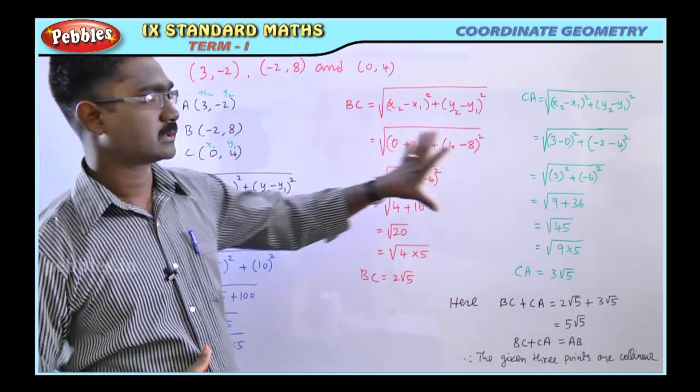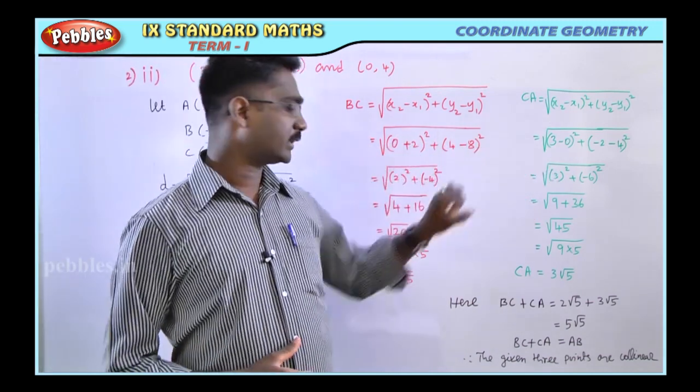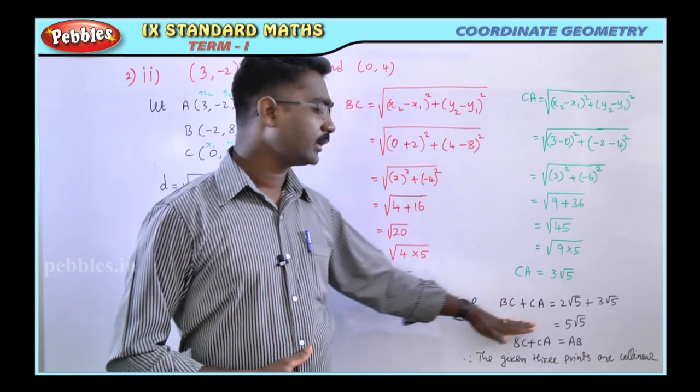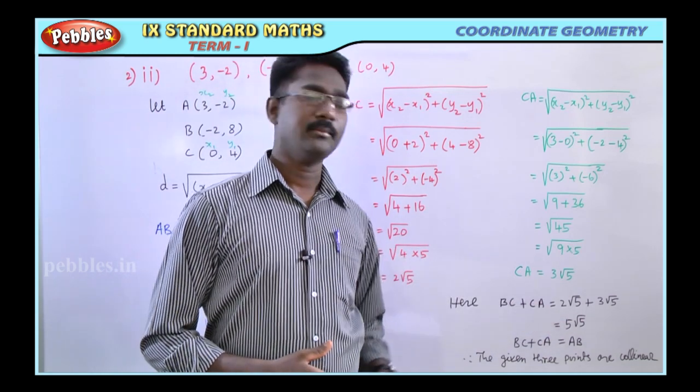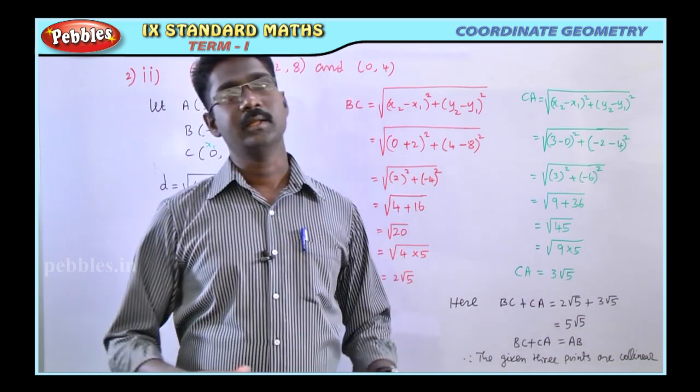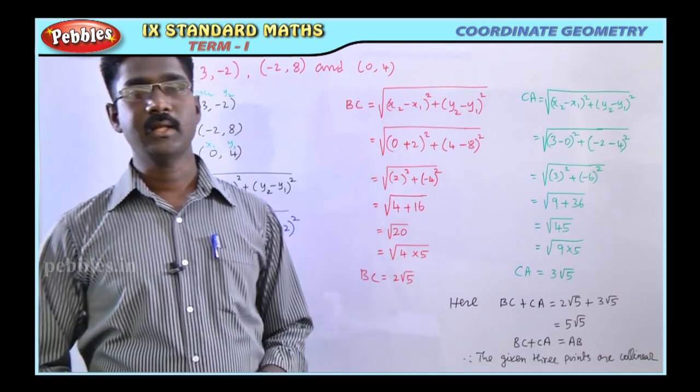Three distances are found. When we add any two distances and it equals the third length, the given three points are collinear.